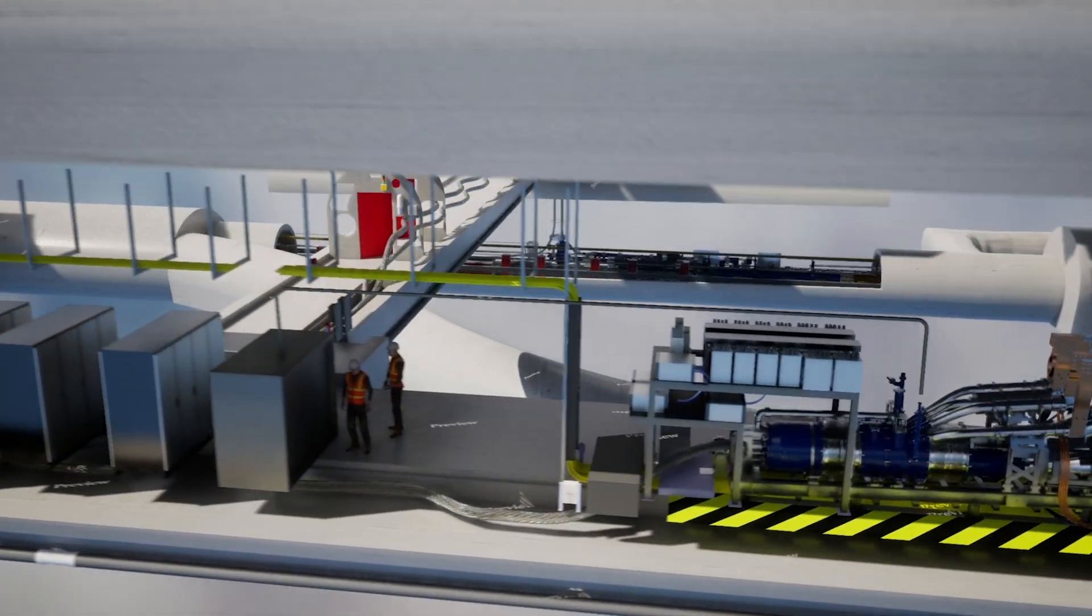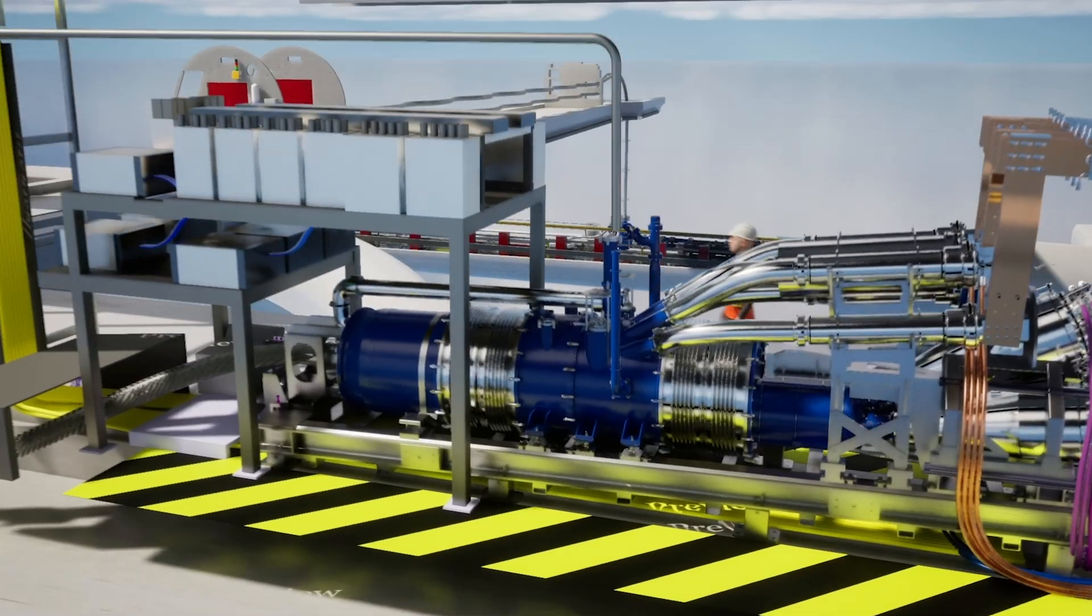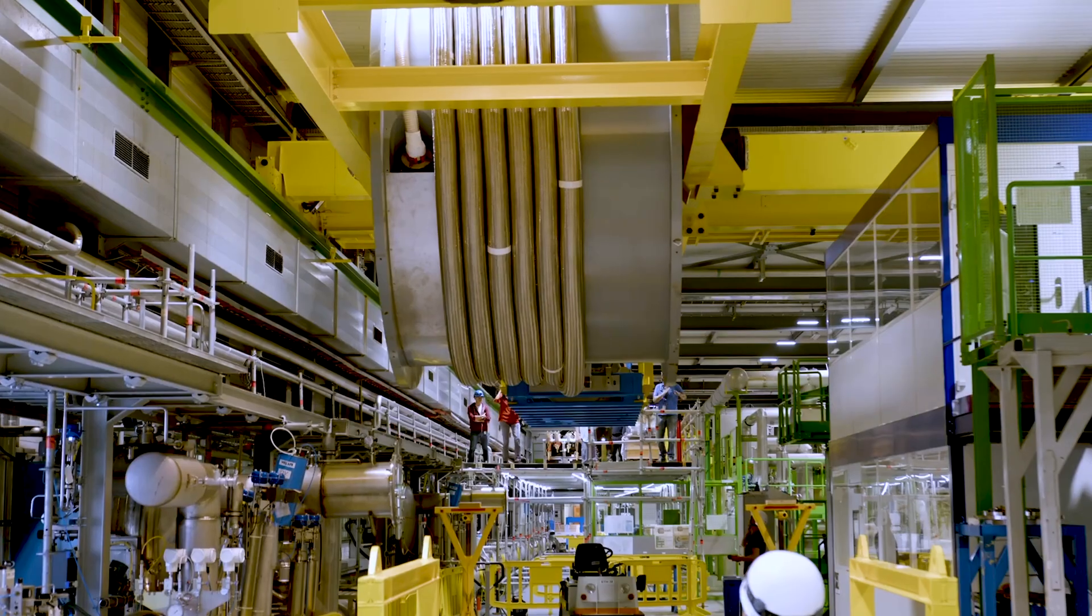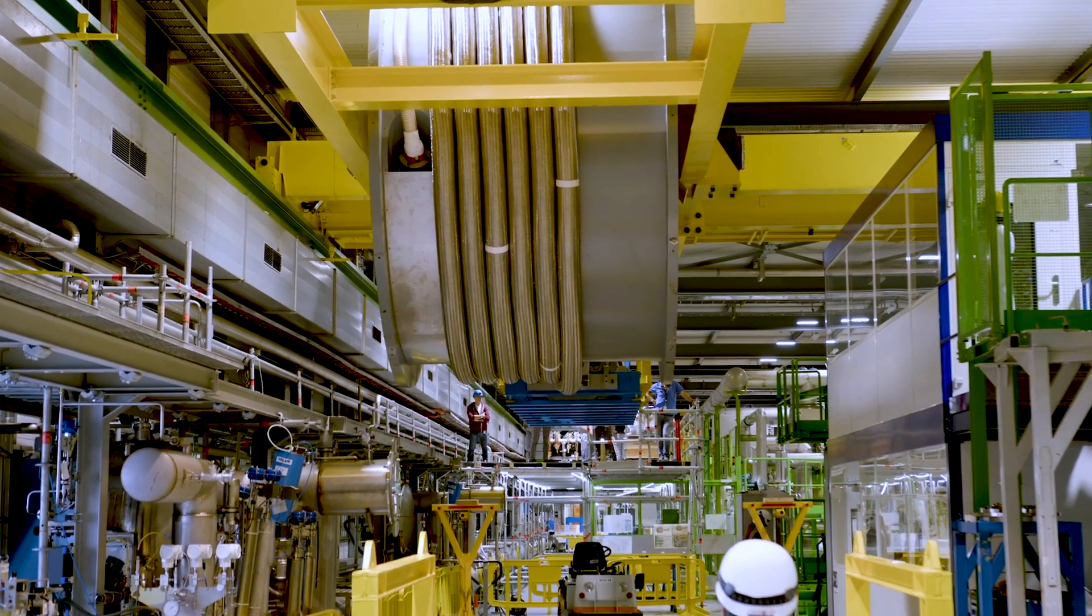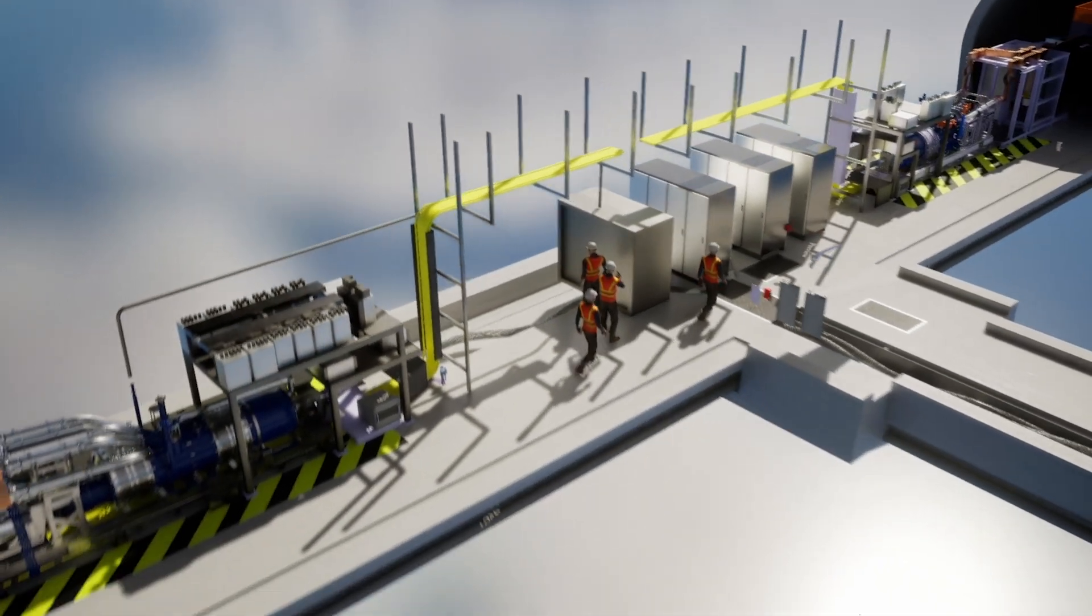The Inner Triplet String, or IT String, is a new test facility that is being built in a workshop at CERN above ground and is part of this new innovative system. This facility allows scientists to model the final chain of these new magnets before they're installed in the tunnel.